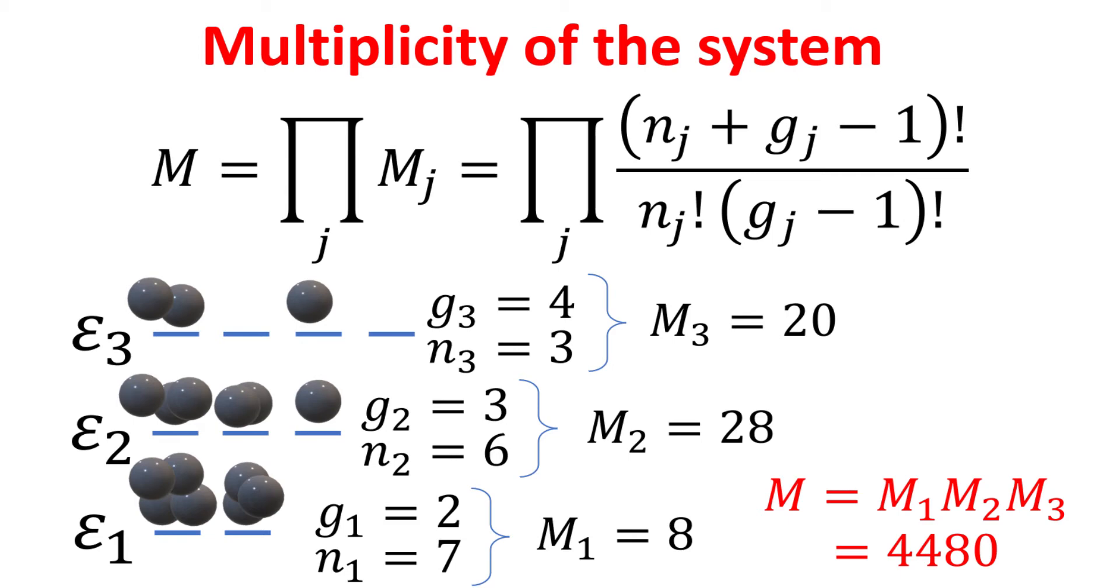As illustrated in this three-energy level diagram, the total multiplicity M of the system can be described as the product of the multiplicity of all the energy levels M_j, which can be expressed in terms of the number of bosons in each level, denoted as n_j, and the degeneracies of the energy level denoted as g_j.